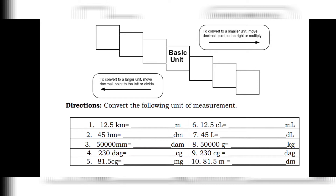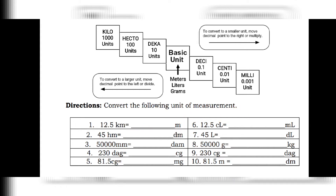Let's now have a practice. Convert the following: kilo, hecto, deka, basic unit, desi, centi, and mili. First, convert 12.5 kilometers to meters. From kilometers going to meters is three jumps, so we move three decimal places going to the right. The answer will be 12,500 meters.